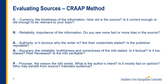The second A stands for accuracy — the reliability, truthfulness, and correctness of the information stated. Is it factual? Is it too biased? Has it been peer reviewed? Is the information verifiable? P is for purpose — the reason that the information exists. What is the author's intent? Is it mostly fact or is it opinion? Who stands to benefit from the existence of this source? And who is the intended audience?